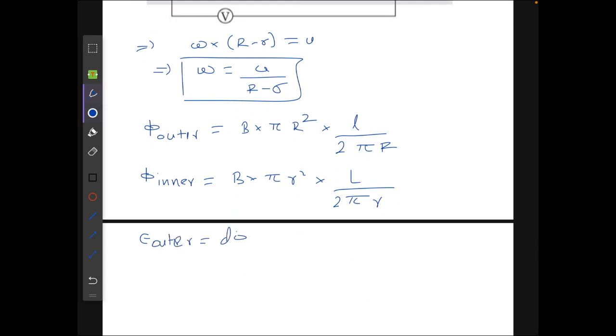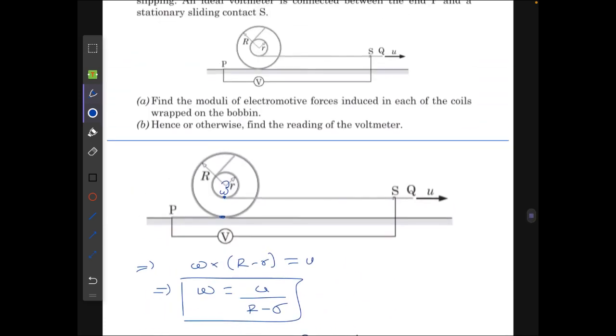From here the EMF induced in the outer and inner coils can be written as E outer will be equal to d phi outer over dt, which will be equal to B capital R over 2 multiplied by dL by dT. Here the dL by dT can be observed to be omega times capital R